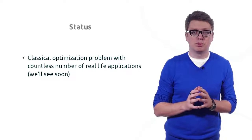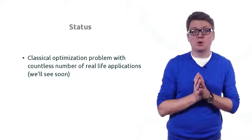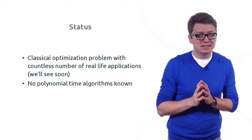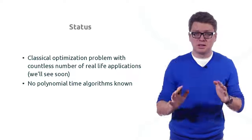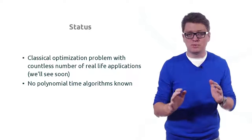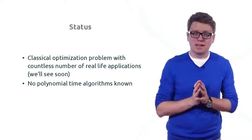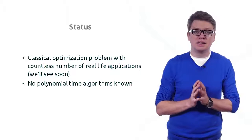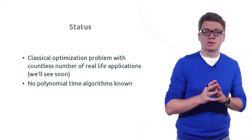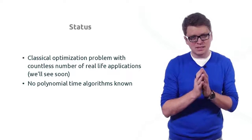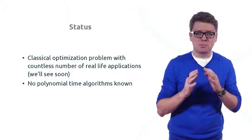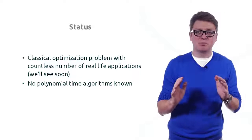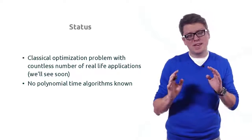There are countless applications of the traveling salesman problem in practice. The state of the art is that we still do not know a provably efficient algorithm — we do not have any algorithm guaranteed to find an optimal cycle in time polynomial in n. This is because we still do not know whether the classes P and NP are equal. This is a classical NP-hard problem, so we do not expect such an algorithm to exist.